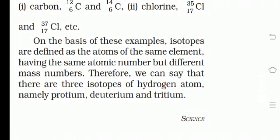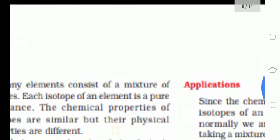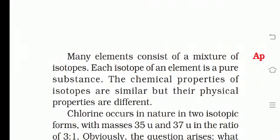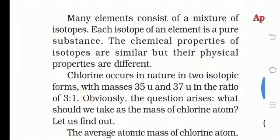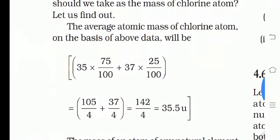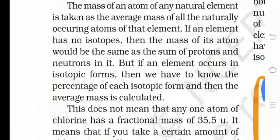Therefore, we can say there are three isotopes of hydrogen: protium, deuterium, and tritium. Many elements consist of a mixture of isotopes. Each isotope of an element is a pure substance. The chemical properties of isotopes are similar but the physical properties are different. Isotopes ki chemical property same hogi but unki physical property different ho jayegi.